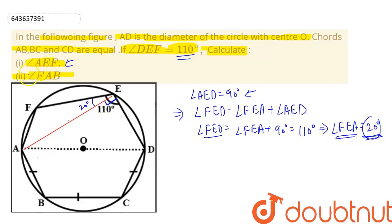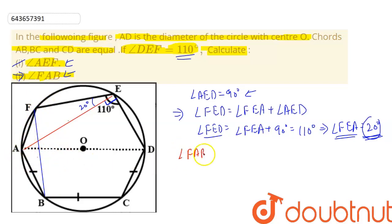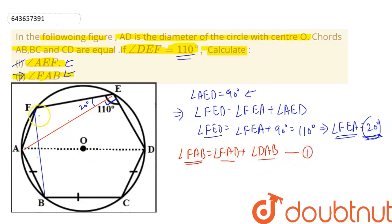Now we focus on the second part — finding angle FAB. From the figure, angle FAB equals angle FAD plus angle DAB. We need to find both of these angles, then sum them to get angle FAB. Let us call this result one.